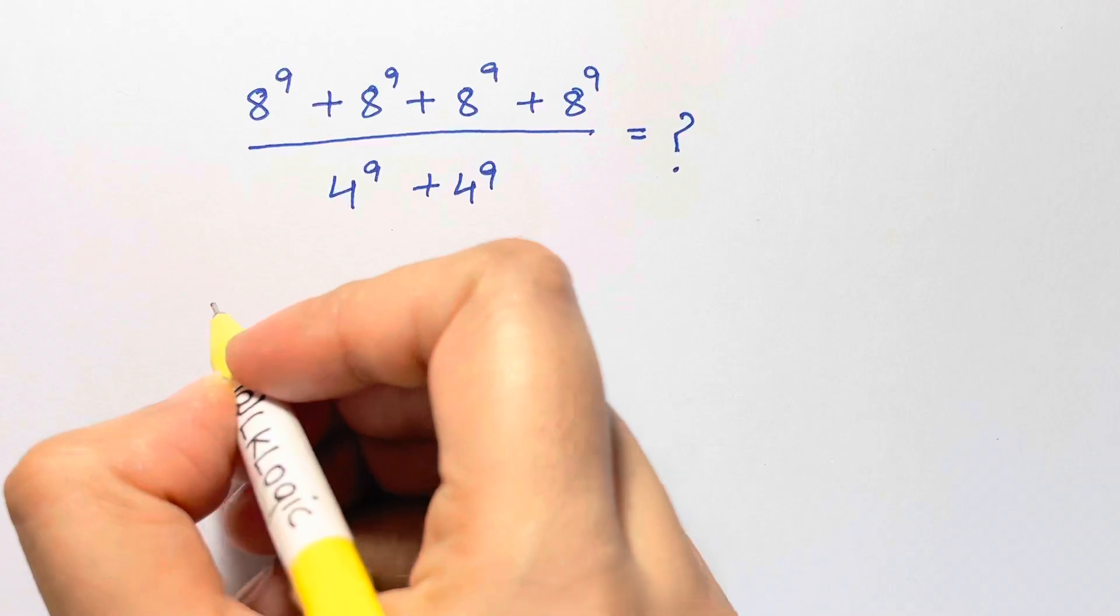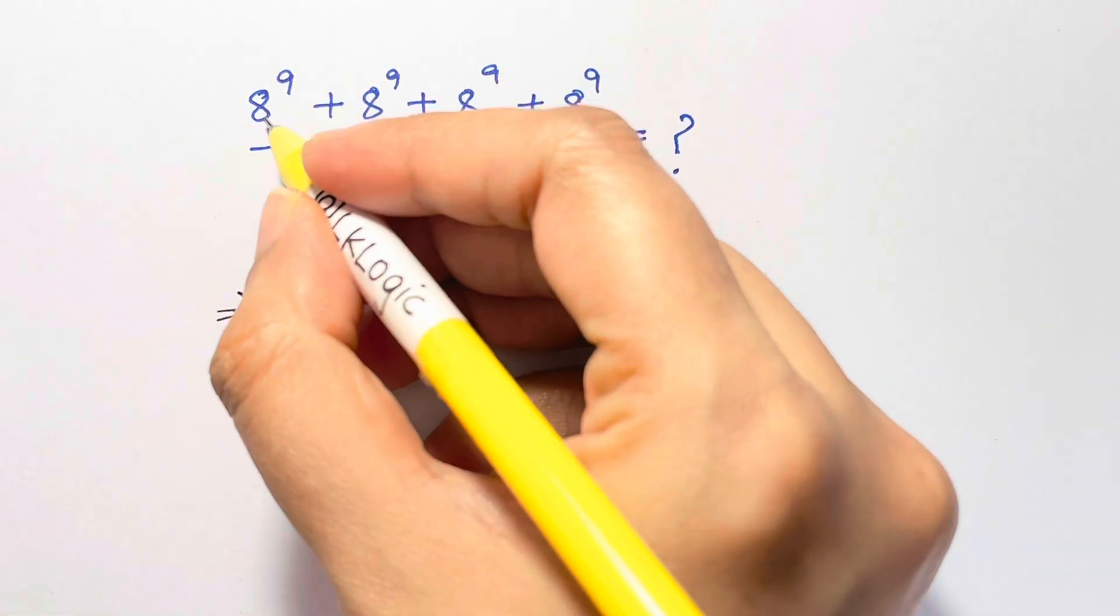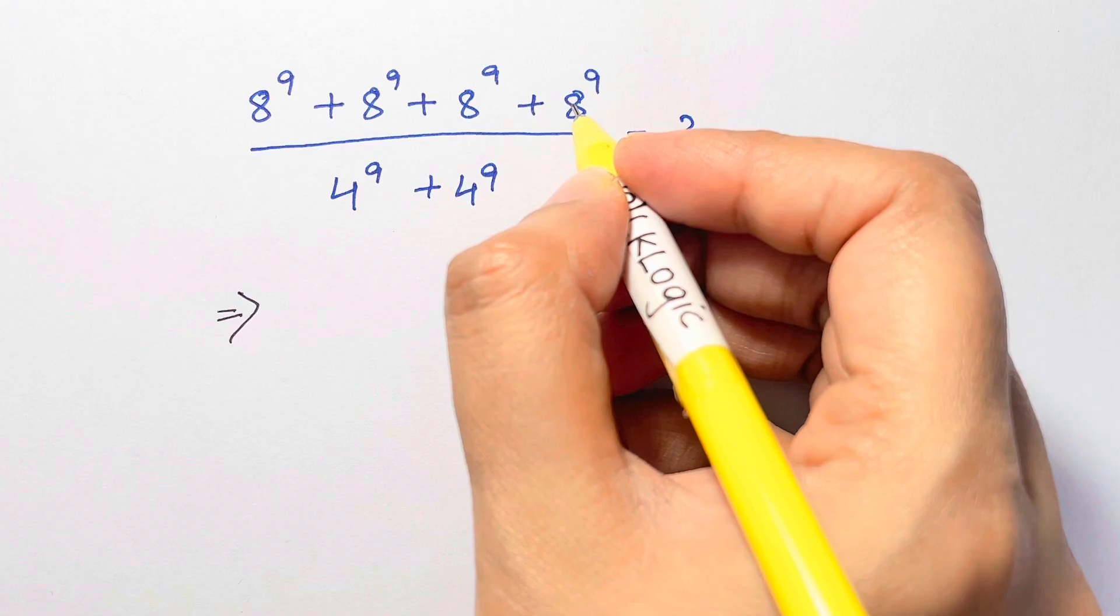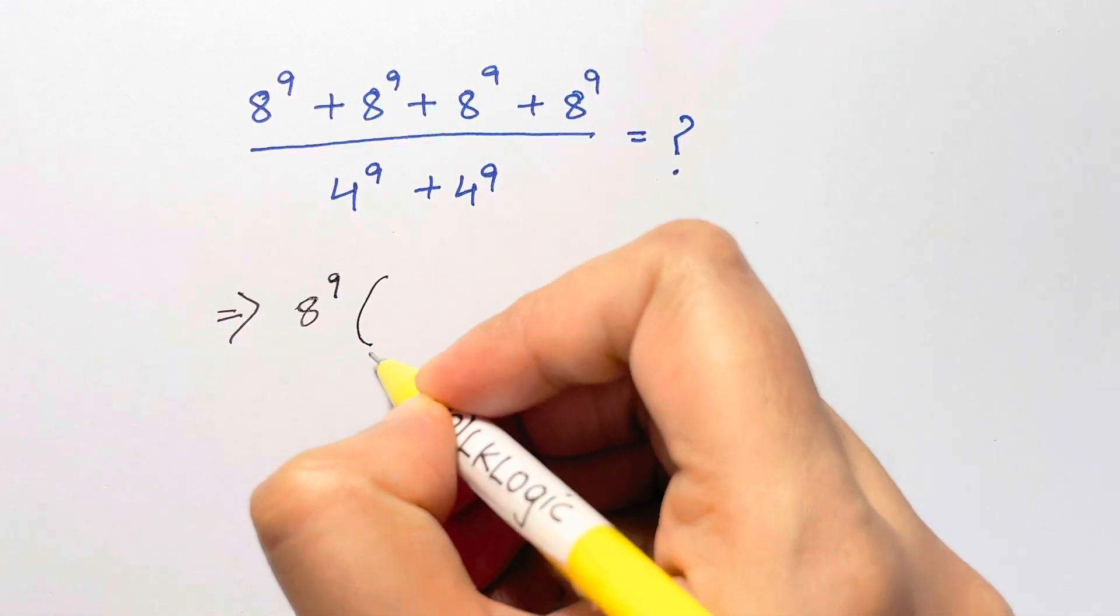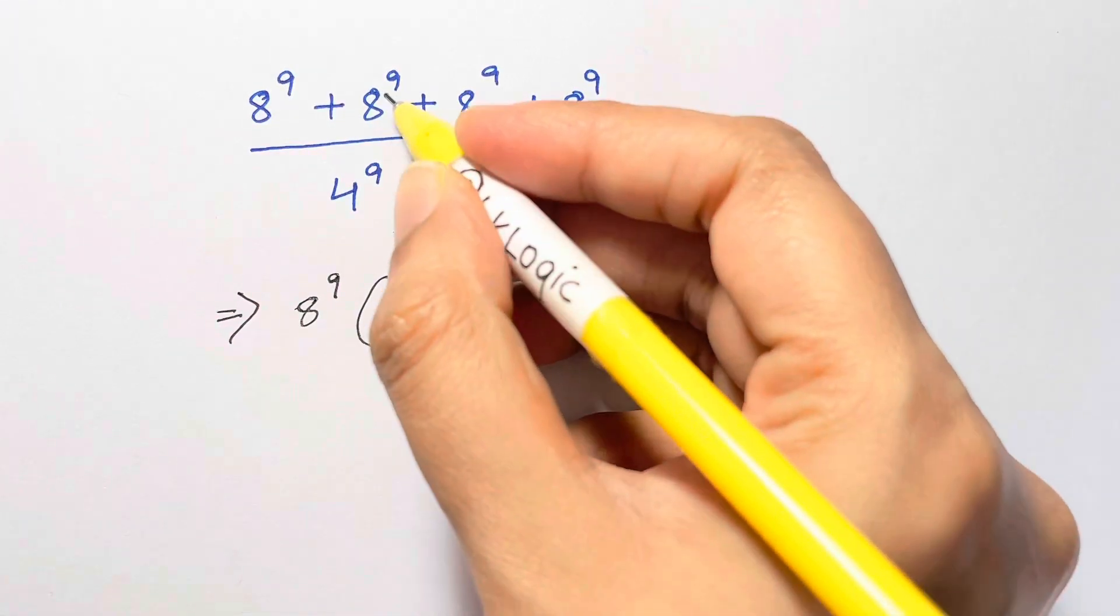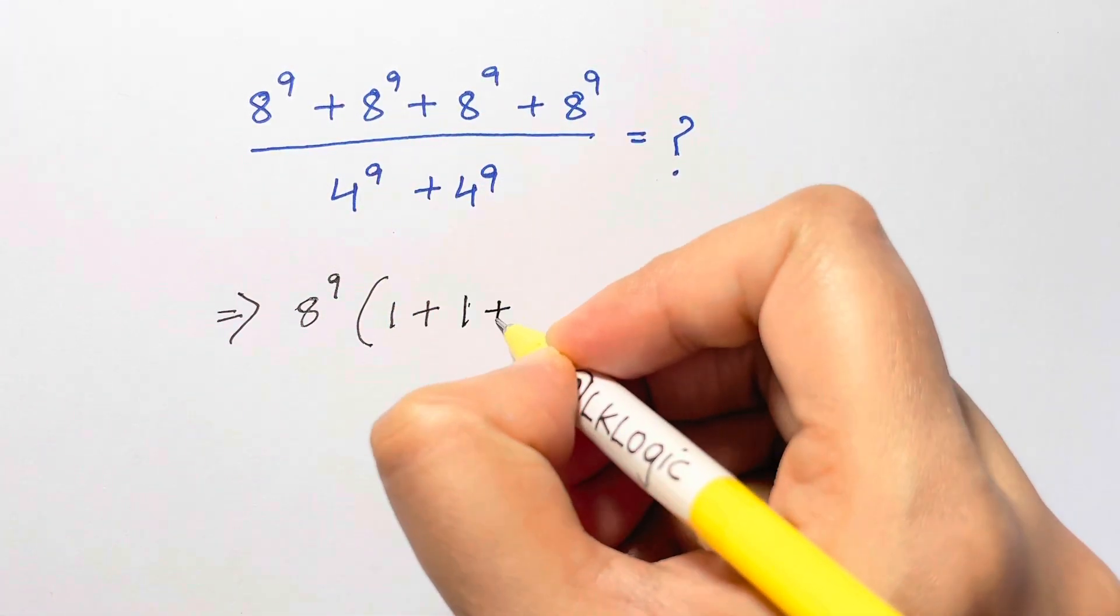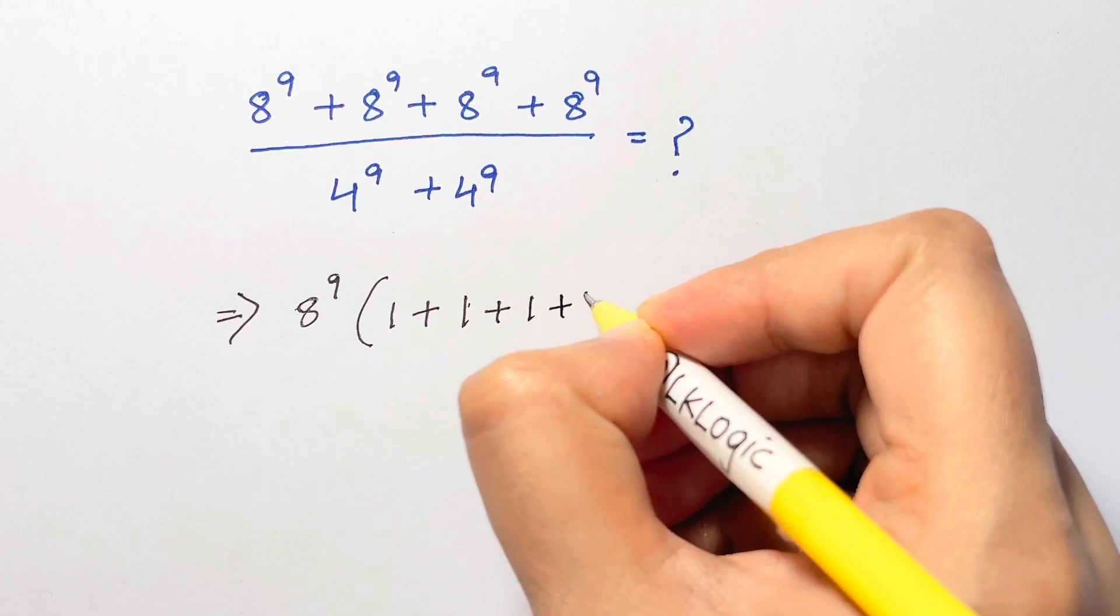So let's see, the first step is to take 8 to the power of 9 out as common. Everywhere you have 8 to the 9, if you divide by it, you get 1. Same way, divide this by this, 1, this by this, 1, and again 1.